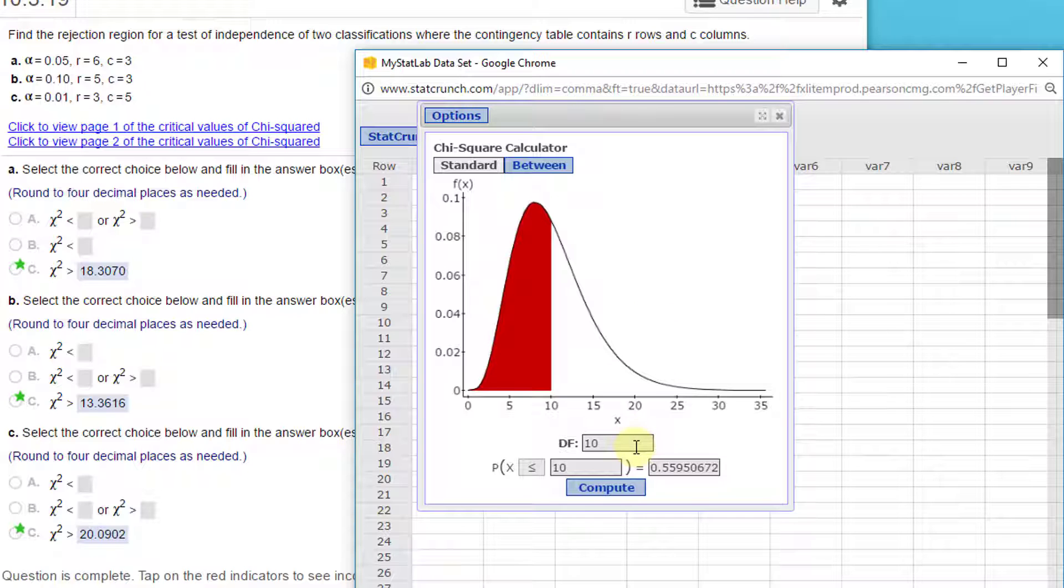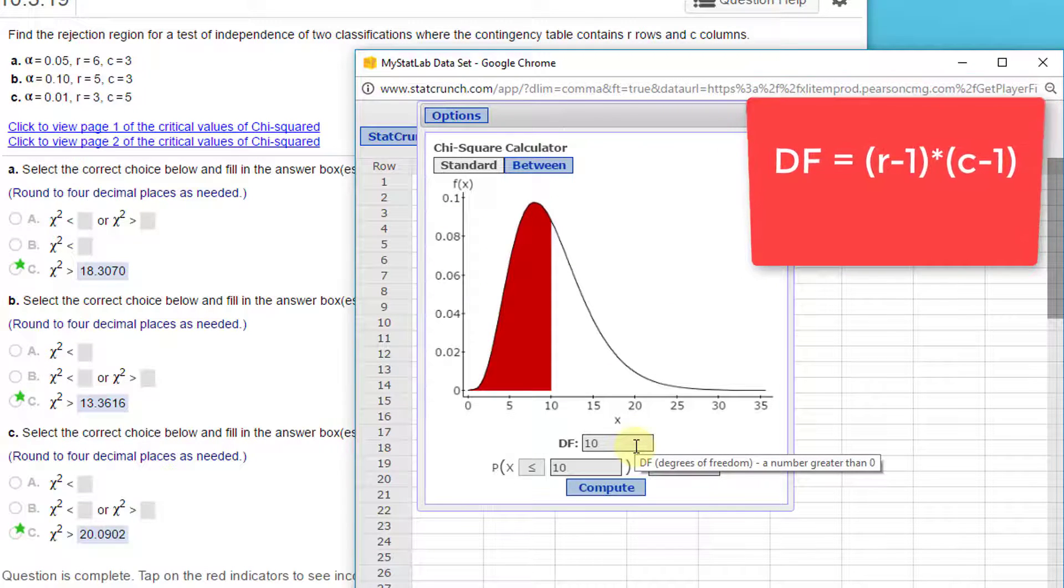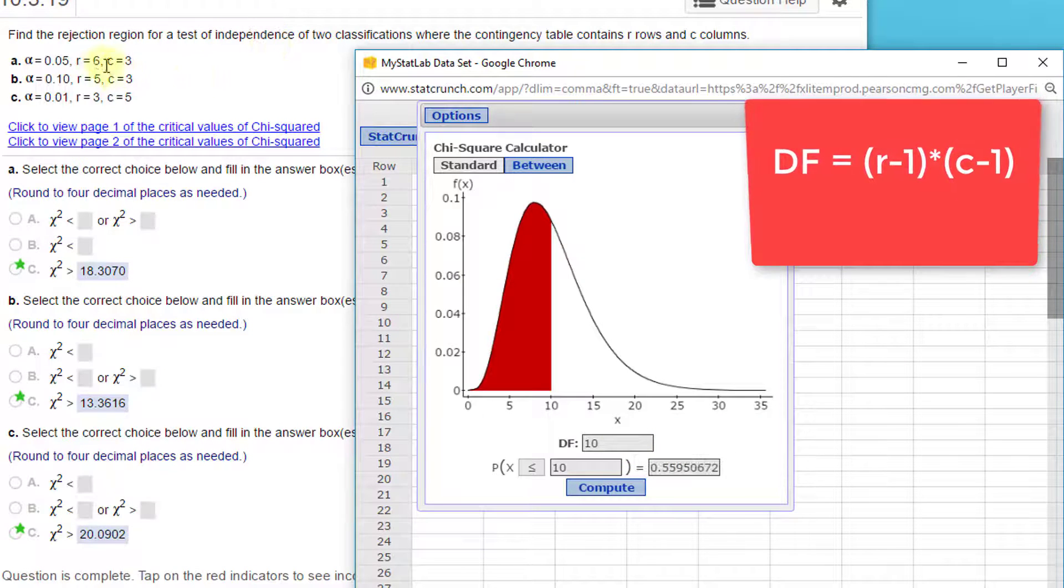We need the number of degrees of freedom. For a two-way table, you just take the number of rows minus 1 and multiply that times the number of columns minus 1.